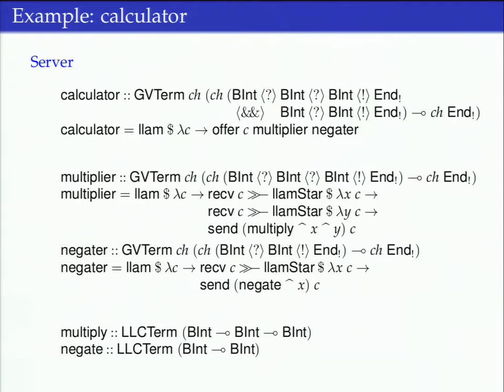Writing the server portion is quite similar. This calculator server takes the dual type. It's expecting to pick either the binary or the unary operation and then follow that protocol, just returning the channel that has ended. We're going to instantiate it with the binary operation to be multiply and the unary operation to just be negate. All it has to do is offer along that channel a choice between those two things, and then we can implement the multiplier and negator, which is quite straightforward.